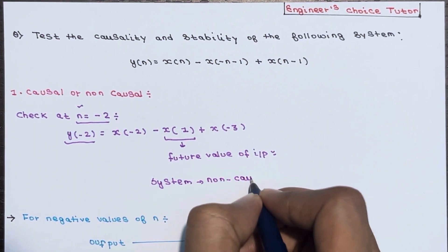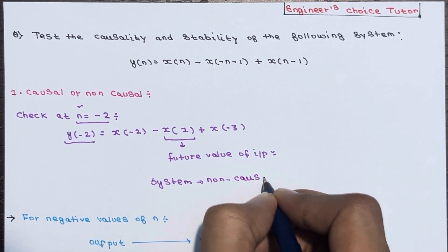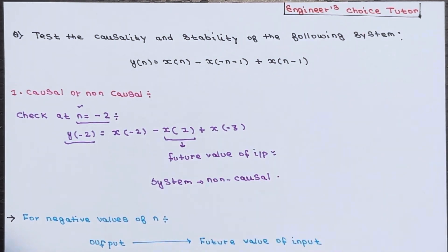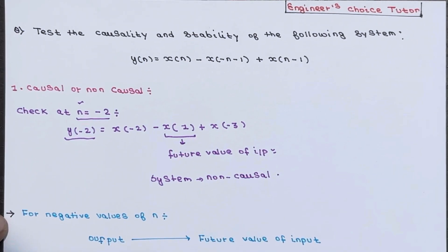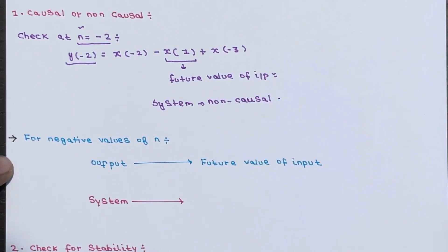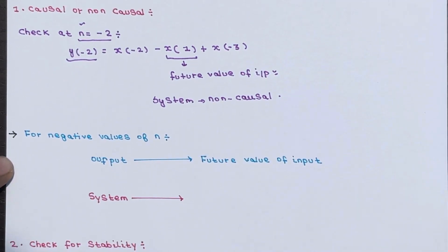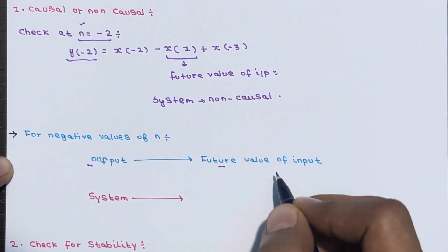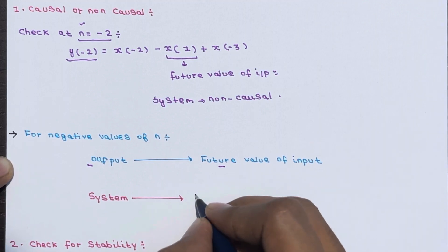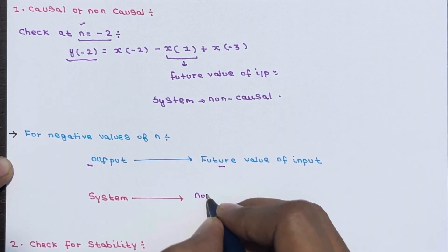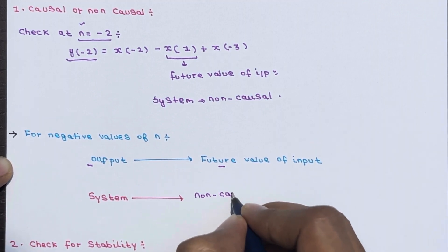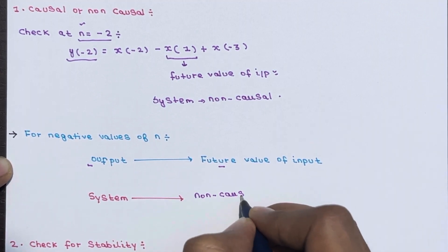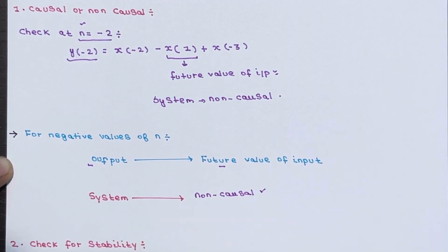For negative values of n, the output depends on the future values of input. So this particular system is a non-causal system. Our output depends upon the future values of input, so the system is non-causal.